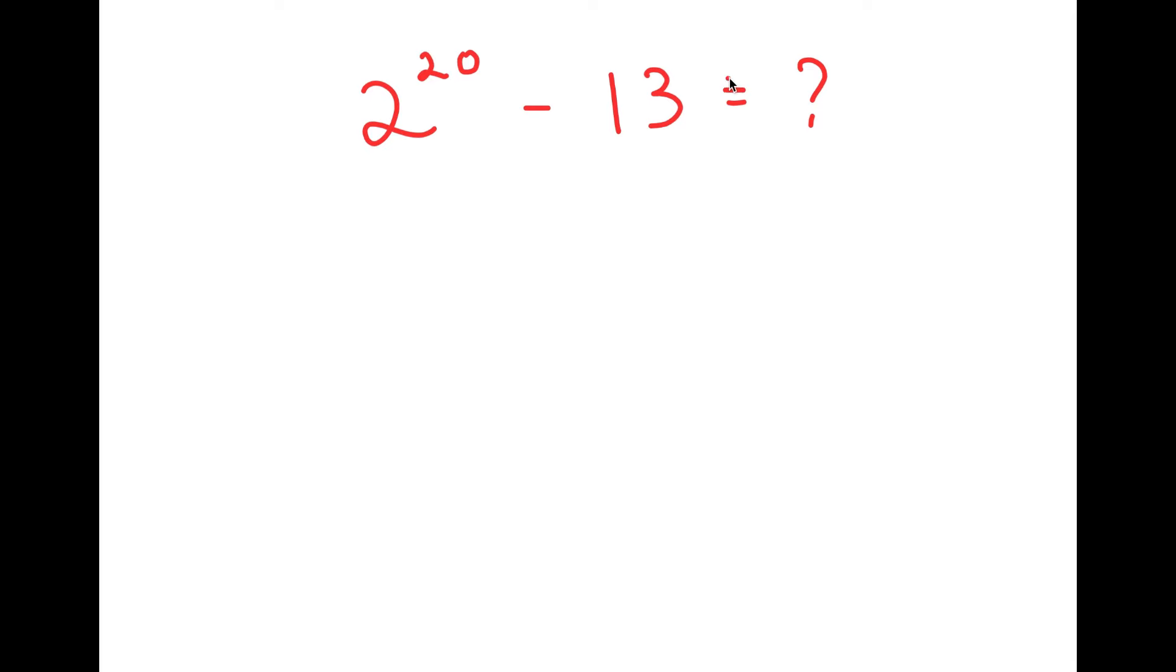To solve this, I'm going to start by rewriting 2 to the power of 20 as 2 to the power of 10 plus 10. If I have something in the form a to the power of m plus n, this is equal to a to the power of m times a to the power of n. This equals 2 to the power of 10 times 2 to the power of 10.